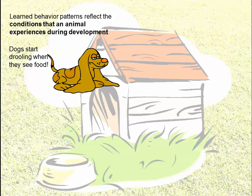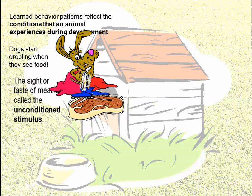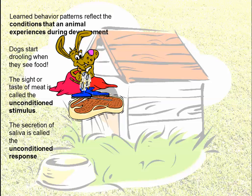The example is intuitive to understand, but there's vocabulary that identifies different things. Even if something looks intuitive, you have to explain it using independent and dependent variables and controlling your experiment well. Dogs start drooling when they see or smell food — there's the saliva. The sight or taste of the meat is called the unconditioned stimulus: we haven't taught the dog anything; it naturally salivates in the presence of food. The saliva being secreted is called the unconditioned response.